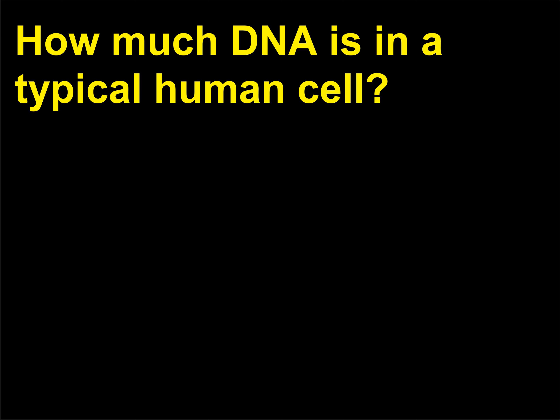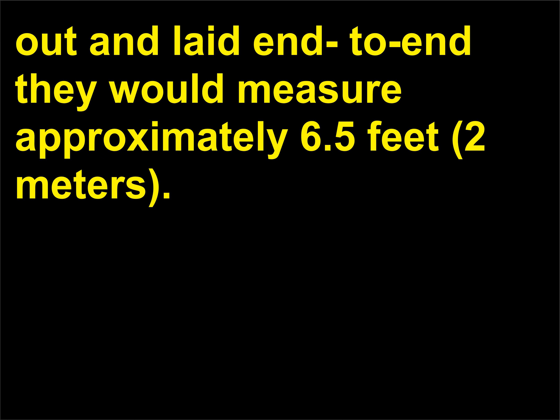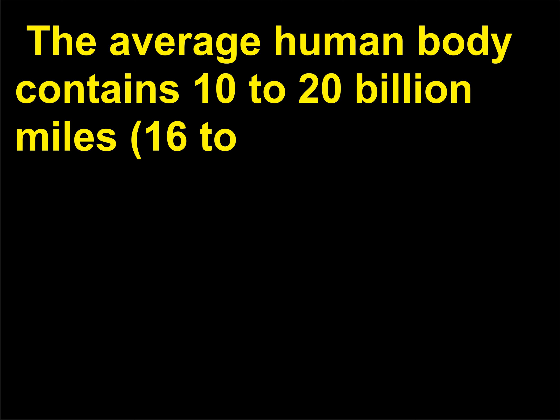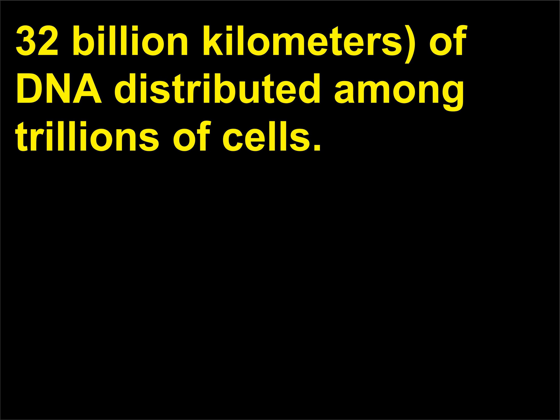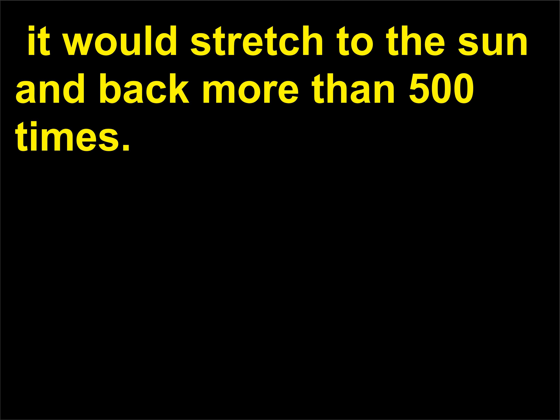How much DNA is in a typical human cell? If the DNA, deoxyribonucleic acid, molecules in a single human cell were stretched out and laid end to end, they would measure approximately 6.5 feet, 2 meters. The average human body contains 10 to 20 billion miles, 16 to 32 billion kilometers, of DNA distributed among trillions of cells. If the total DNA in all the cells from one human were unraveled, it would stretch to the sun and back more than 500 times.